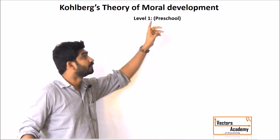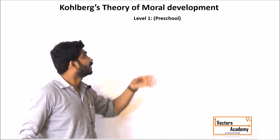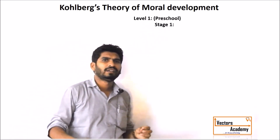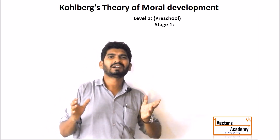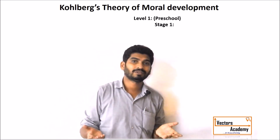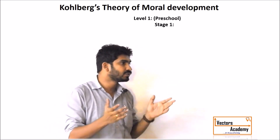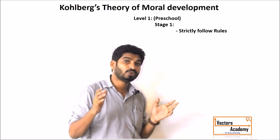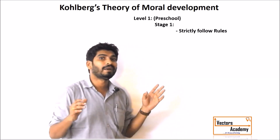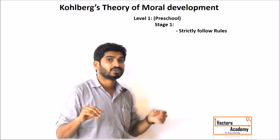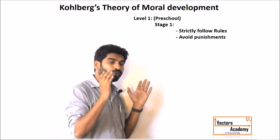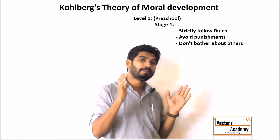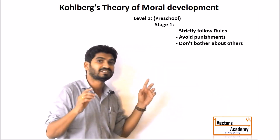At level one, which occurs usually at preschool, there are two different stages — stage one and stage two. In stage one, the mind of the children is directed completely by their parents and teachers. There are certain rules and regulations to be followed, and children think if they do not follow the rules, they are going to have punishments. So they just try to follow the rules, avoid punishment, and do not think about others.